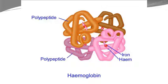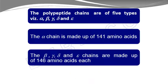The polypeptide chains in hemoglobin are of five kinds: alpha, beta, gamma, delta, and epsilon. The alpha chain is made up of 141 amino acids, while the beta, gamma, delta, and epsilon chains are each made up of 146 amino acids. So there is a notable difference in the number of amino acids between the alpha chain and the other chains.